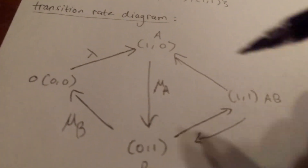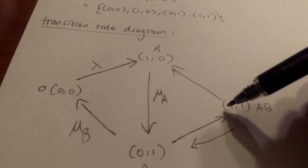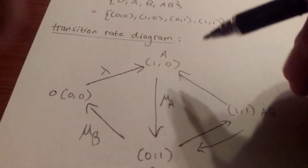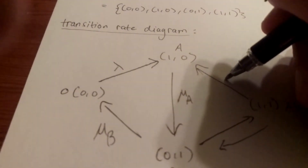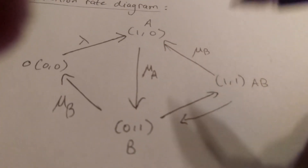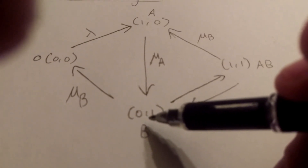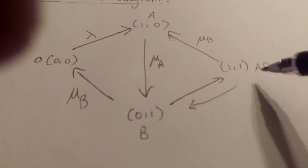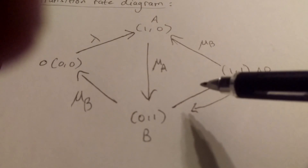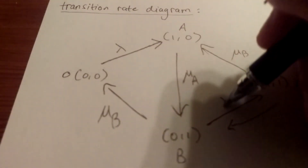Looking at the arrow from (0,1) to (1,1) — the full server state — a customer has entered the system, so that rate is λ. Similarly, from state (0,1) to (1,1), a customer enters at rate λ.